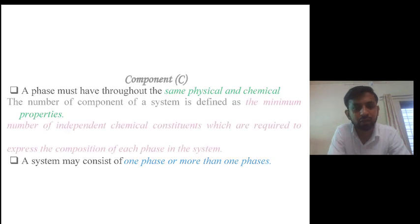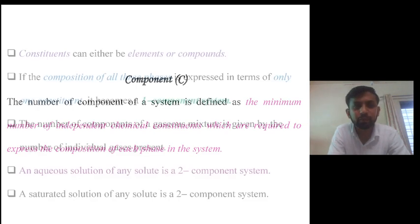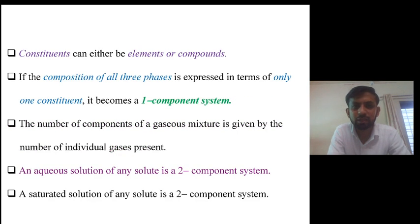Components: the number of components of a system is defined as the minimum number of independent chemical constituents, and such chemical constituents are required to express the composition of each phase present in the system. Constituents can either be elements or compounds.